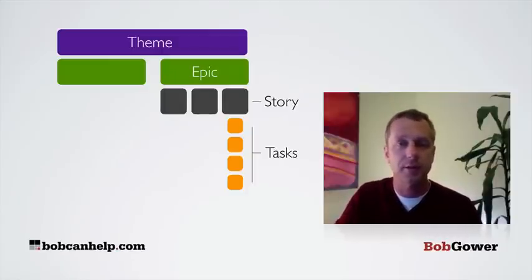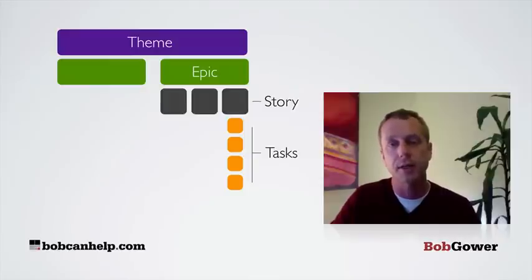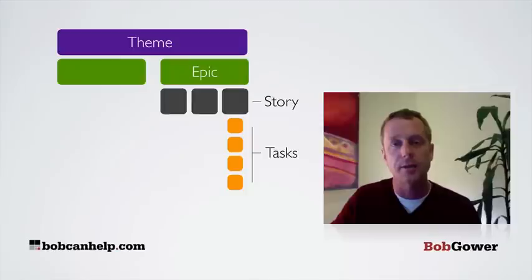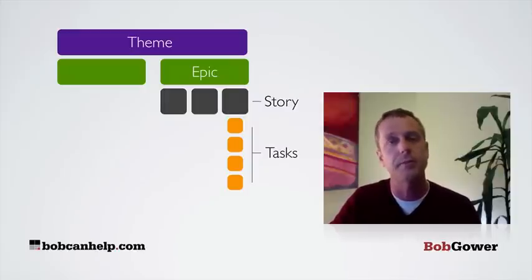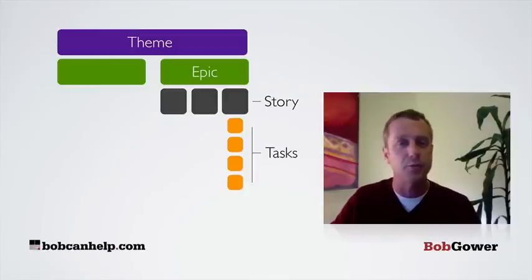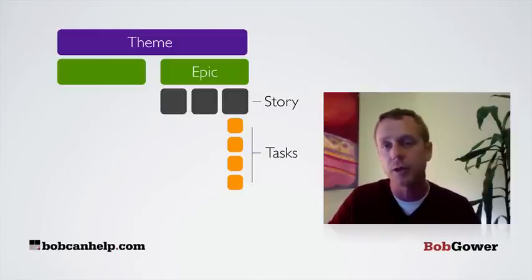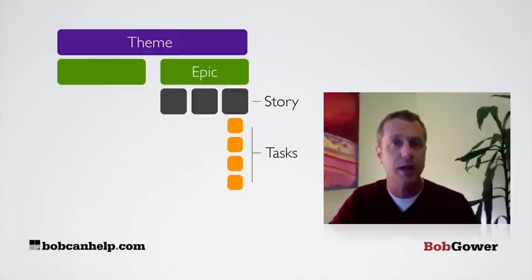The story is a vertical slice through your application — a piece of functionality that the user would notice. It's not something simply for a developer, but something where the user notices something different: there's a new button on the page, a new field in the form, a new capability somewhere. We try to keep it as small as possible so it can be developed within one to two weeks, which is the usual sprint length.